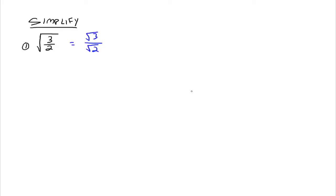Part of that convention of simplifying radicals is no radicals should be in the denominator of a fraction. That just makes it easier to add and subtract fractions later if you don't have any radicals in the denominator. So we look at the square root of 3 over the square root of 2, and we notice that we have a square root in the denominator. So there's this process called rationalizing the denominator.